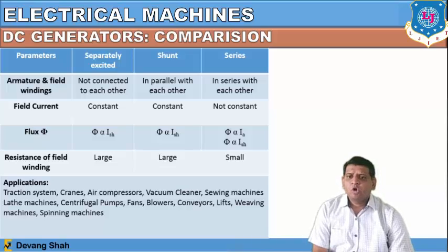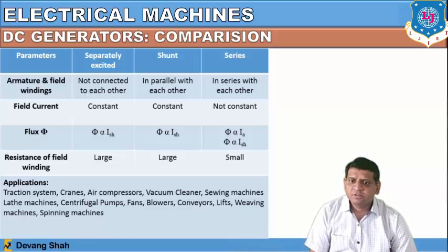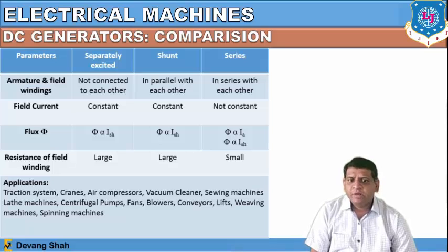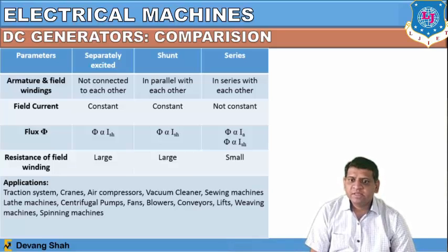The applications of DC machines include traction systems, air compressors, vacuum cleaners, washing machines, lathe machines, centrifugal pumps, fans, blowers, conveyors, elevators, weaving machines, and spinning machines.